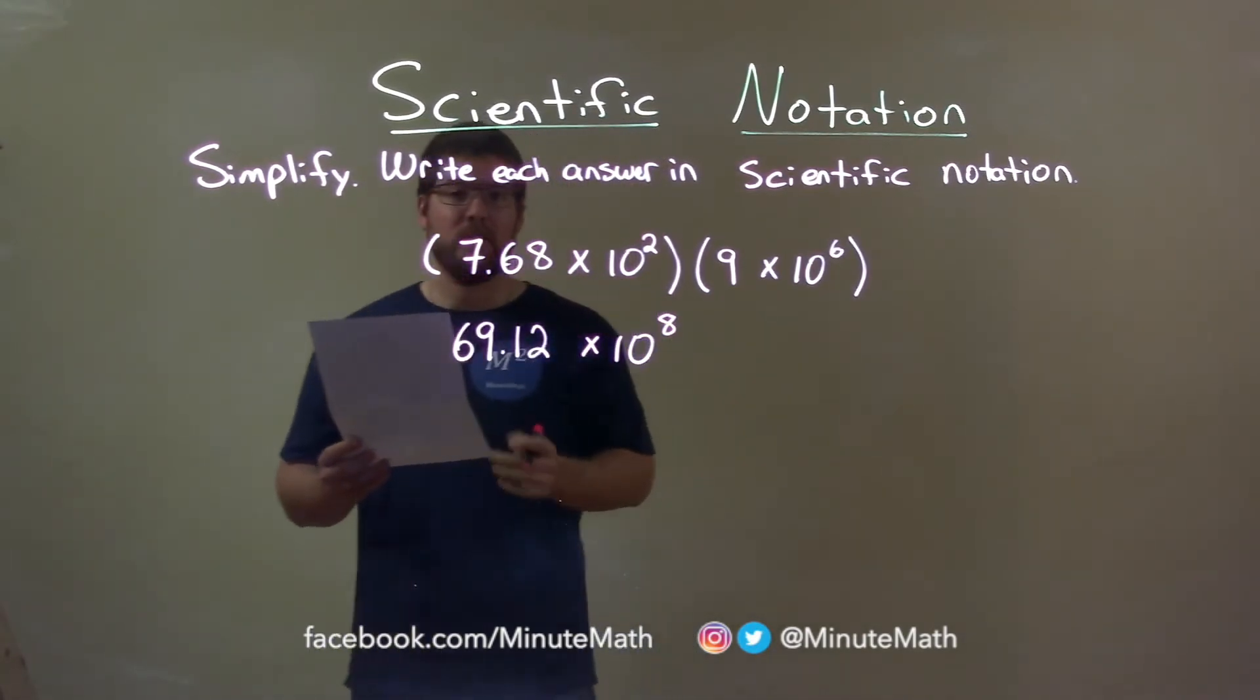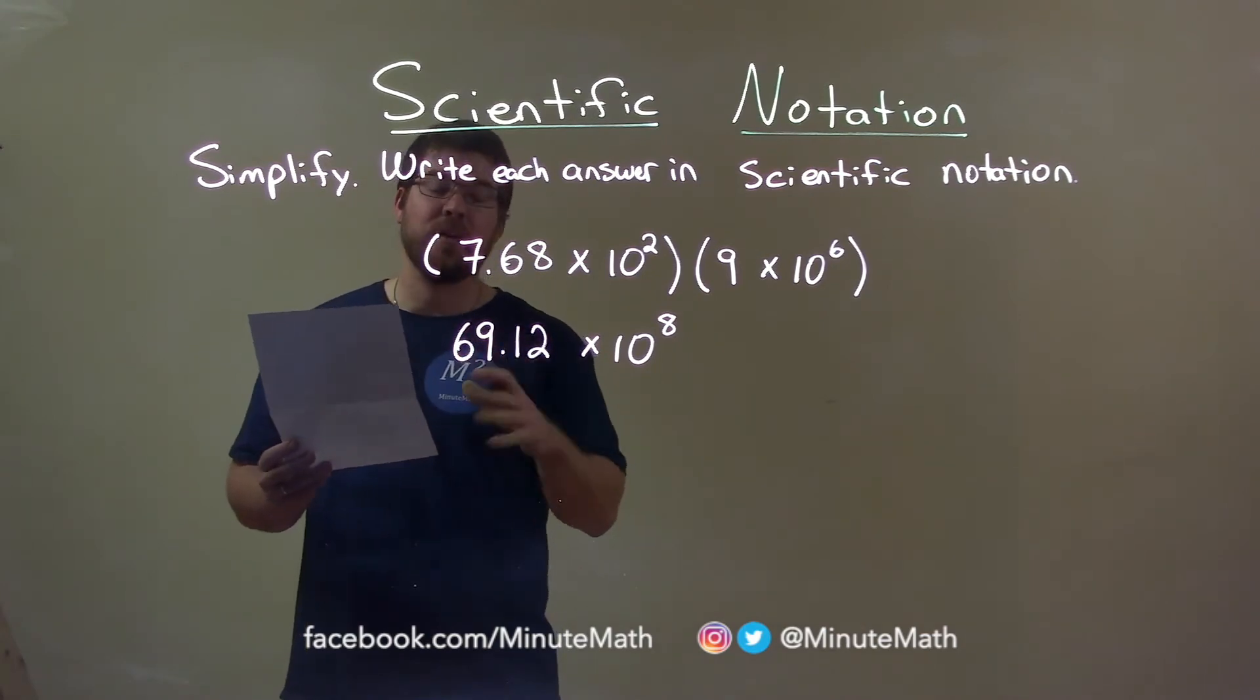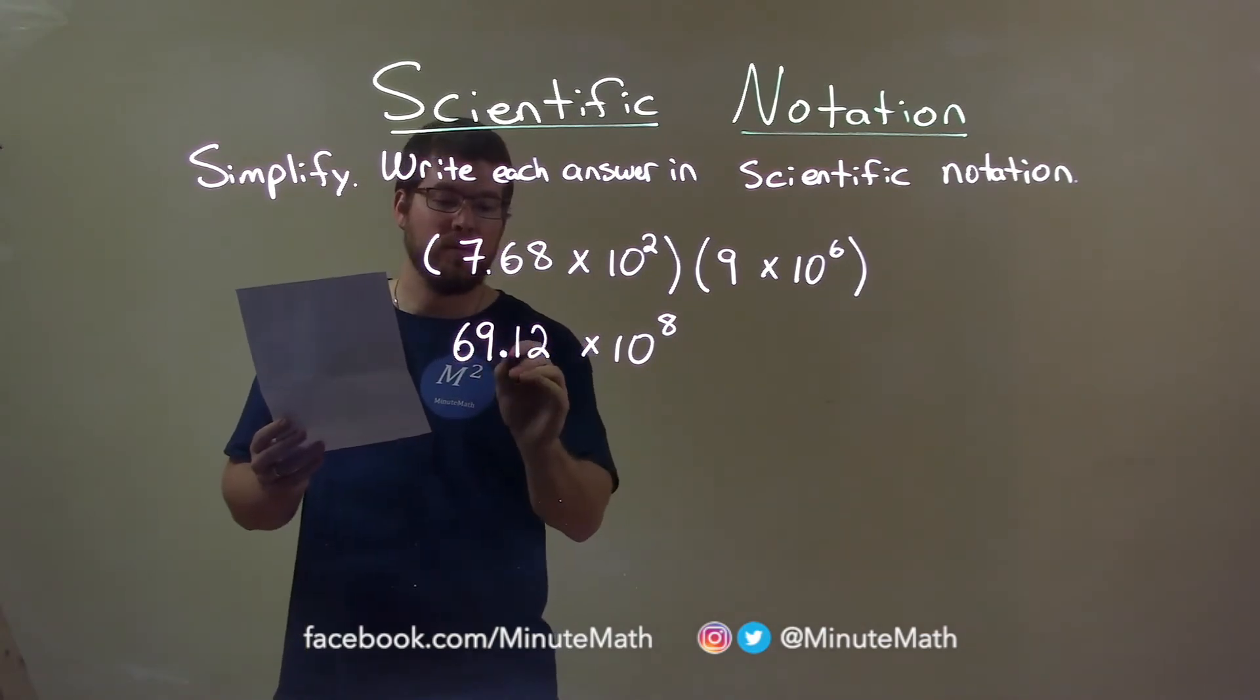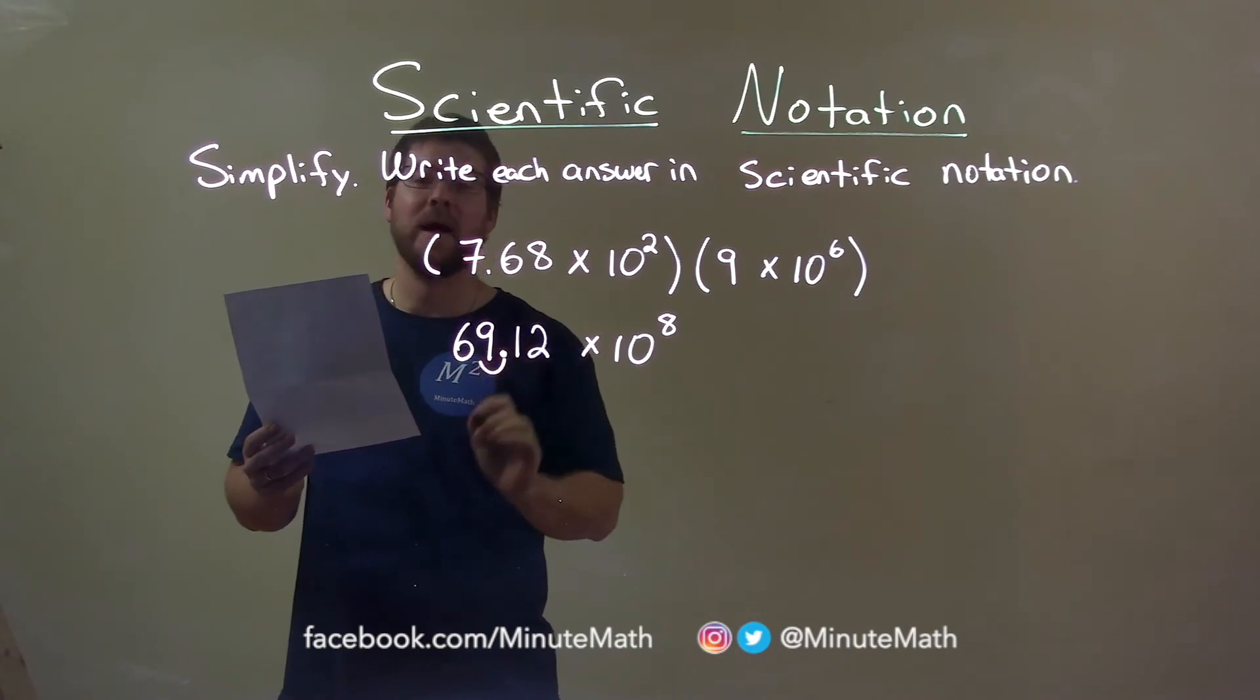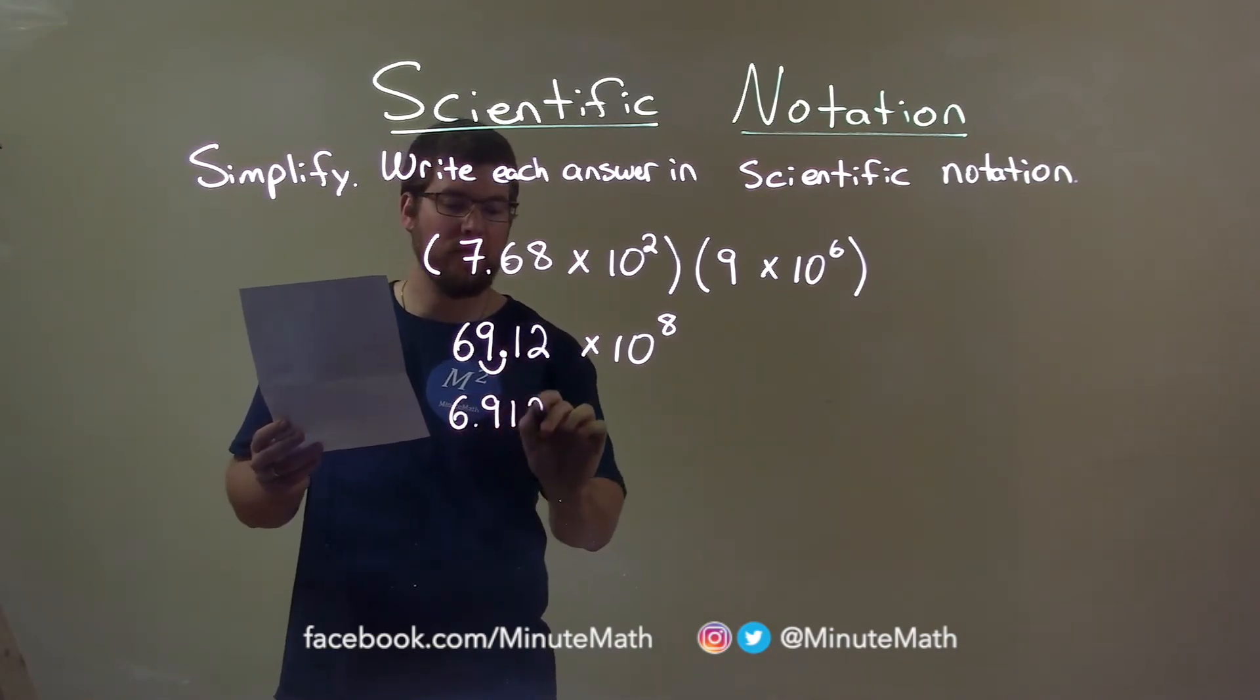Now, I want to write this still in scientific notation. That states that this 6 here needs to be in the 1's position. So, the decimal needs to move over one spot to the left. We have 6.912 here.